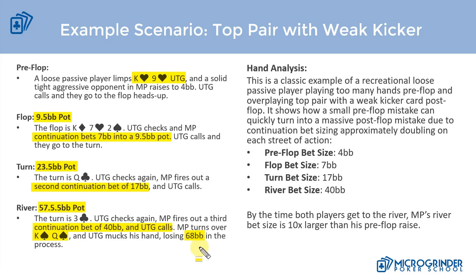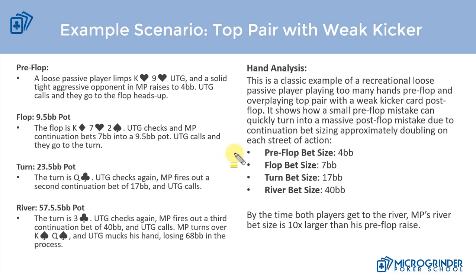This is a classic example of a player overplaying and overvaluing top pair with a weak kicker. The first mistake is that the player should not be open limping at all, and they shouldn't be playing king-nine suited from under the gun because the kicker is not strong enough. They limped in assuming it costs only one big blind, got isolation raised, thought it's only three more big blinds to call, and proceeded to chase a hand they shouldn't have been playing.